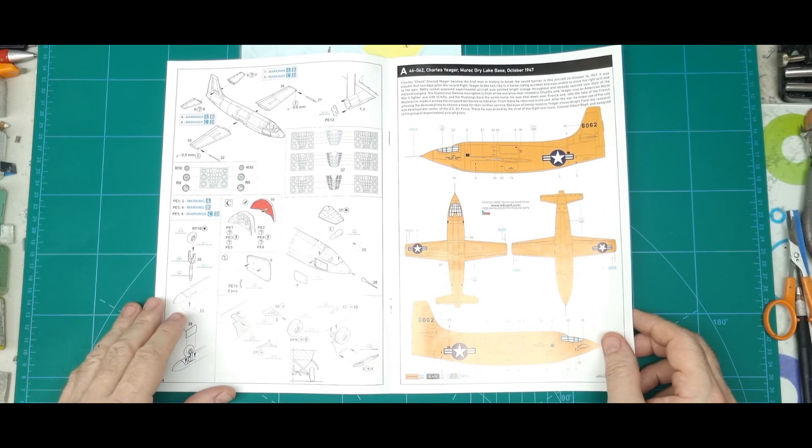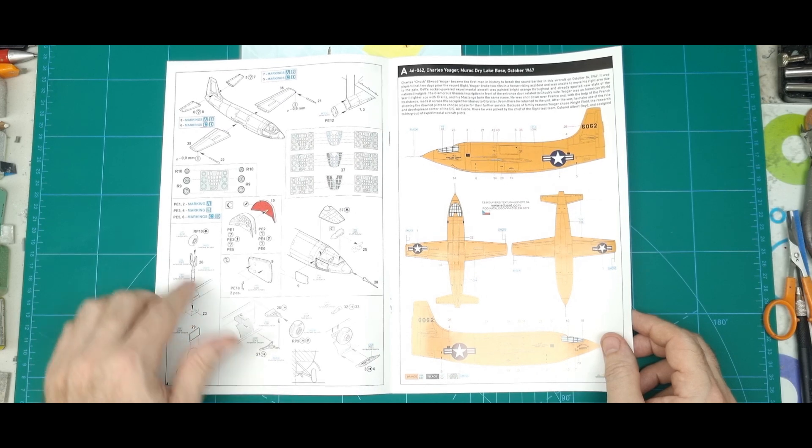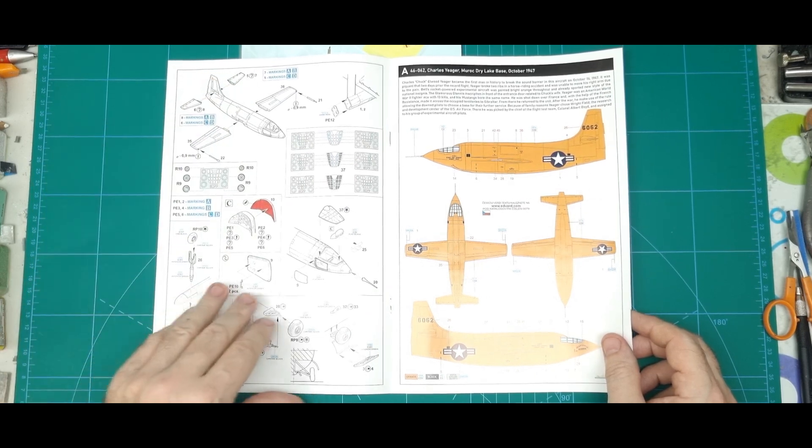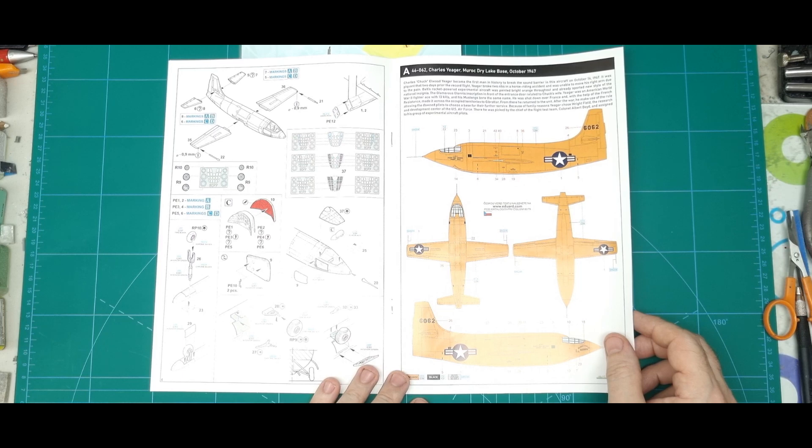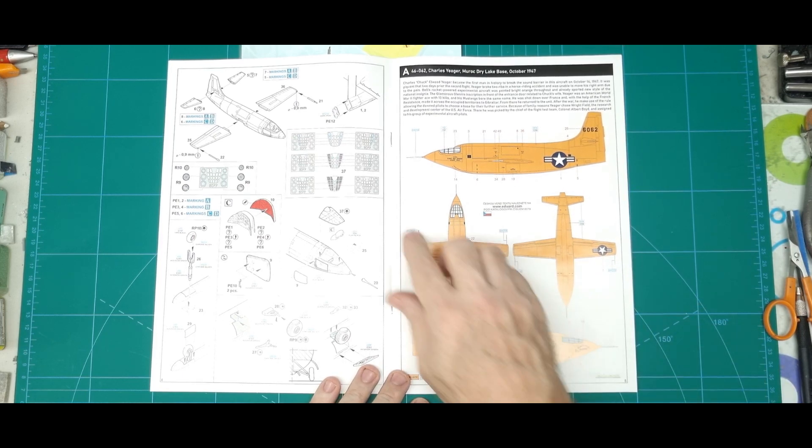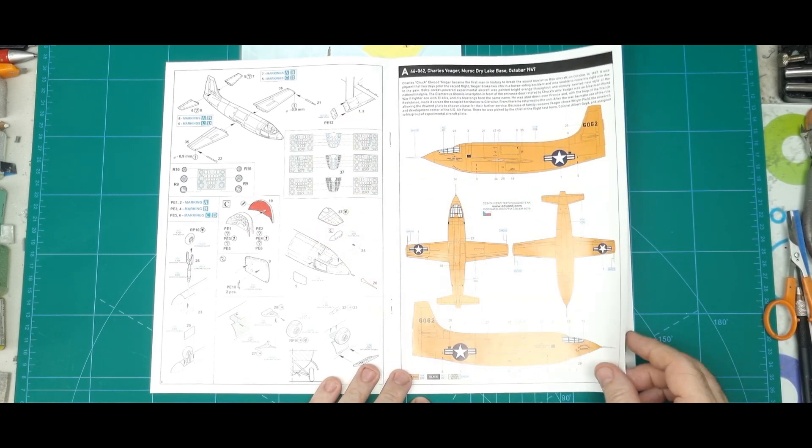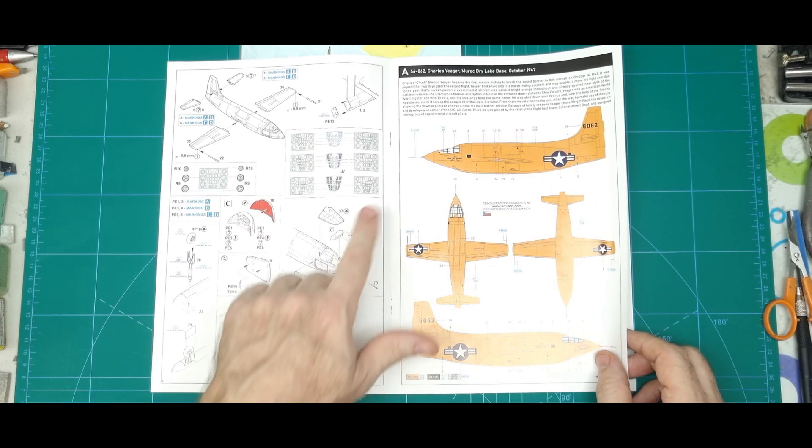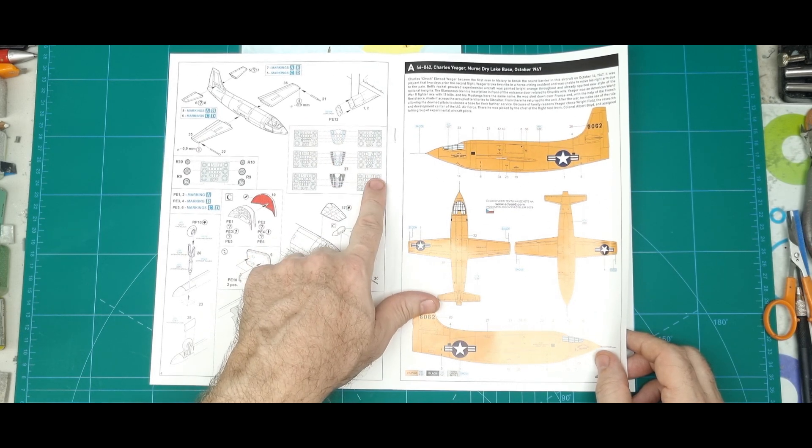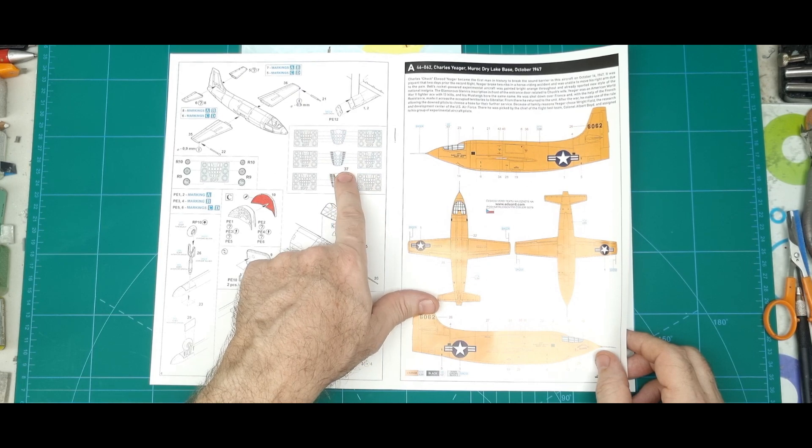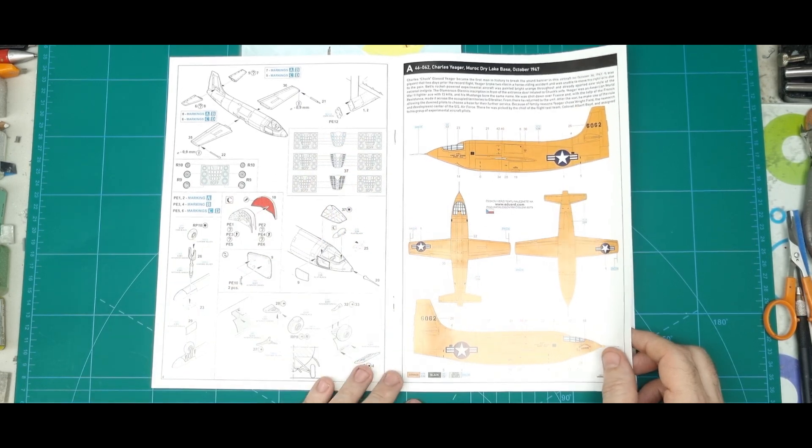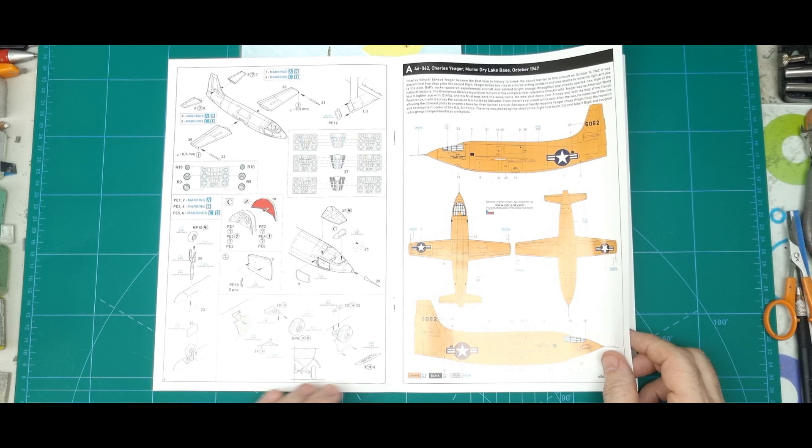So straight away, once that fuselage is together, you're plugging in the wings and the stabilizers. The engine burner at the back is a photo etch piece. And a mat calling out your mask set, which particular window pane it's going into.